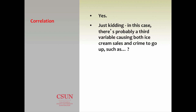There's probably a third variable. For example, it being hot outside or just the summer season might cause ice cream sales to go up, and might also cause crime to go up at the same time. The correlation between ice cream sales and crime exists, but there's no causation — the cause is a third unnamed variable.